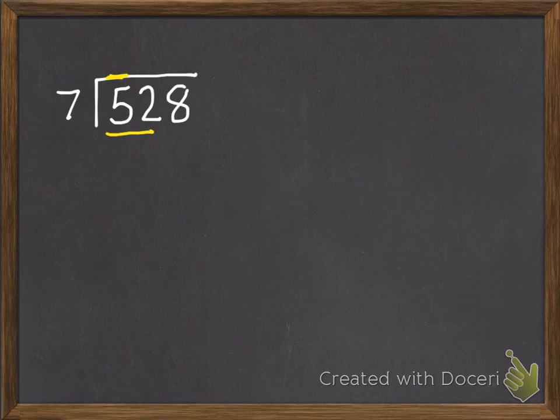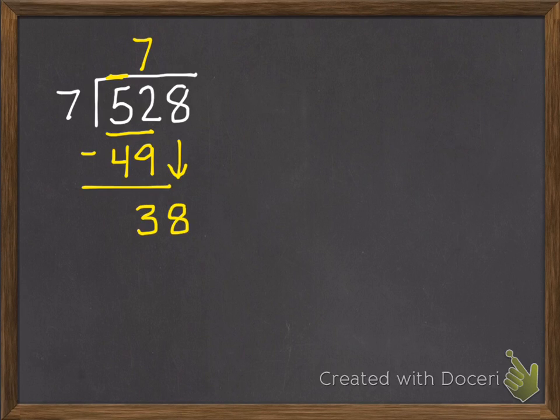So how many 7s are in 52? There's 7. 7 times 7 is 49. So I gave out 49 of those 10s.